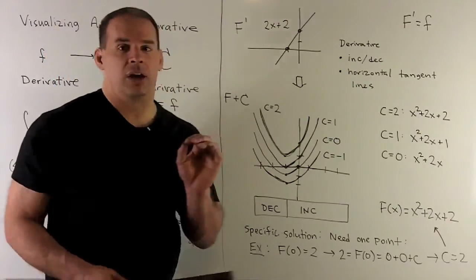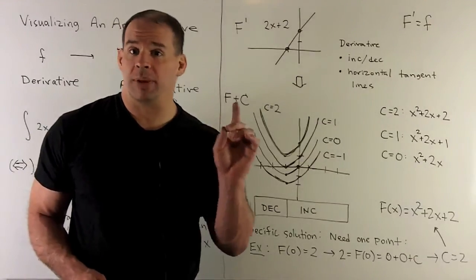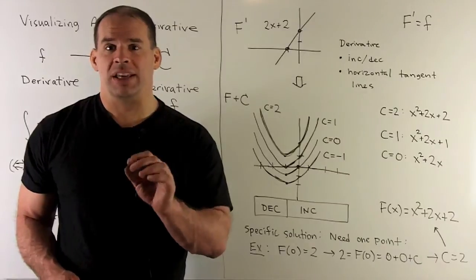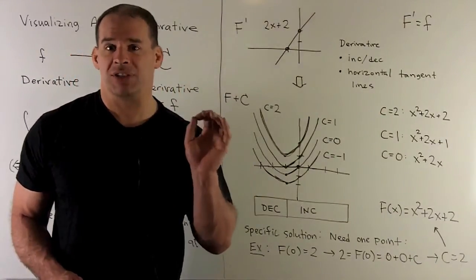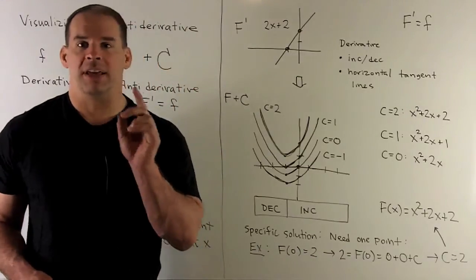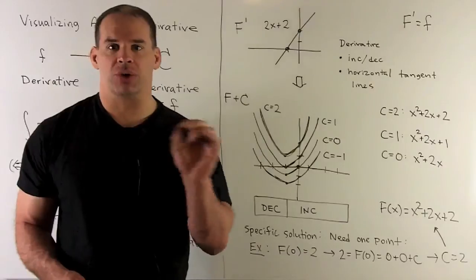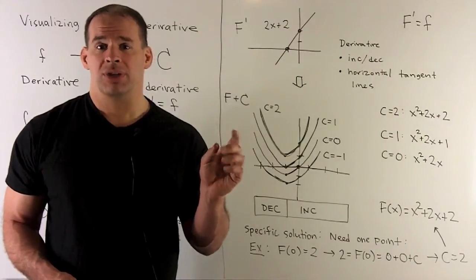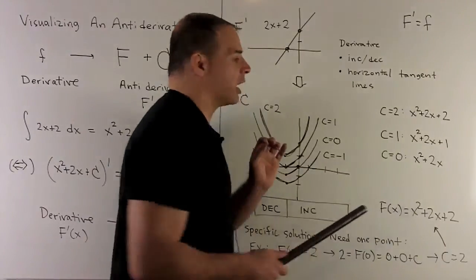There's an analogy with lines: to get the equation of a line, you need one point and the slope — and the slope comes from the derivative. Similarly, to pin down one specific antiderivative, it's not enough just to have the derivative; you also need at least one point. Once you choose a point, you pin down the constant of integration. For instance, suppose we want the solution with F of 0 equal to 2. We plug 0 into x squared plus 2x plus c, getting c, and force that to equal 2, so c equals 2. The specific solution is F of x equals x squared plus 2x plus 2.